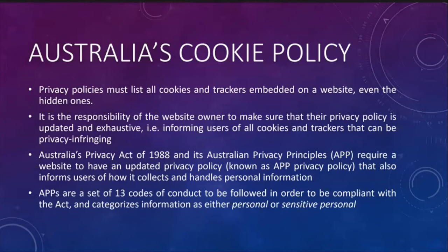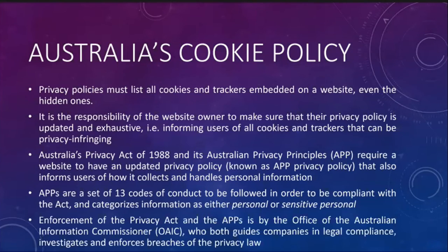Australia's Privacy Act of 1988 and the APPs — the Australian Privacy Principles — require a website to have an updated APP privacy policy informing users of how it collects and handles personal information. The APPs are a set of 13 codes of conduct to be followed for compliance with the Act, categorizing information as either personal information — such as your name, email address, date of birth, or bank details — or sensitive personal information — such as your religious beliefs, racial or ethnic background, and sexual orientation. The OAIC — Office of the Australian Information Commissioner — enforces this privacy act, both guiding companies in legal compliance and investigating and enforcing breaches. Why am I telling you the legal background? Because in case something goes wrong, you know the correct authority is the OAIC.